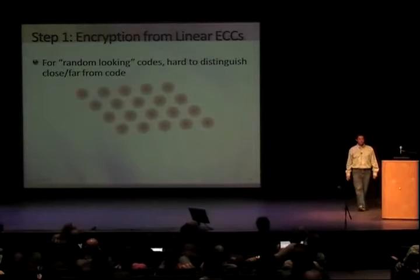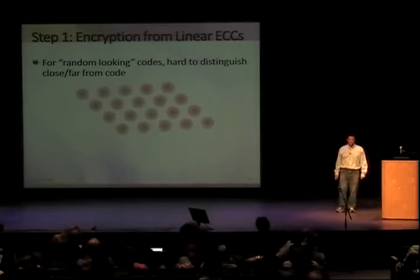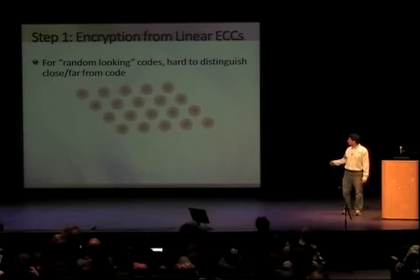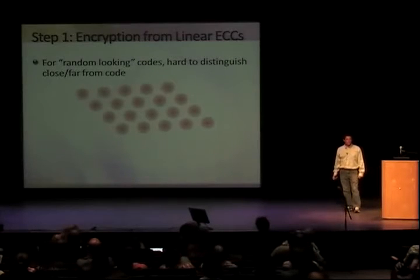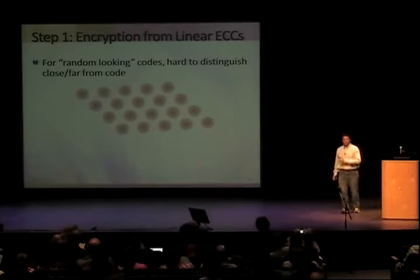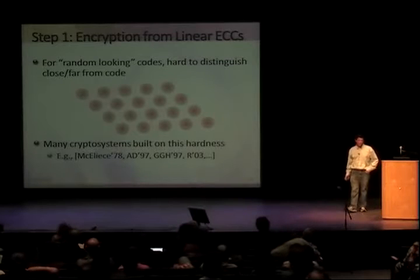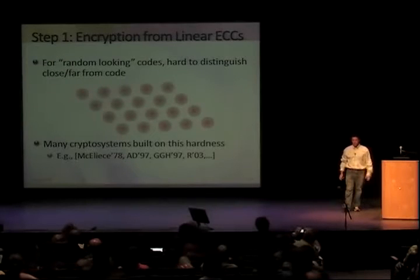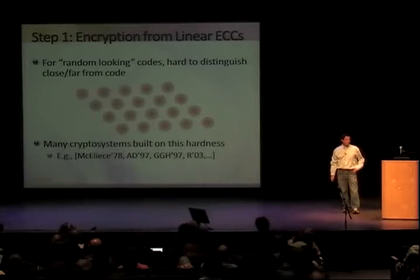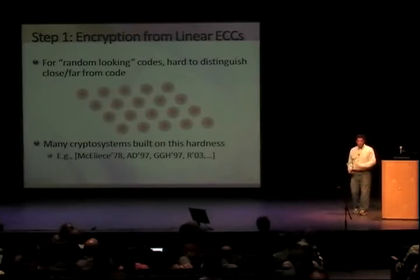Encryption from linear error-correcting codes. The underlying assumption is that for random-looking codes it's very hard to distinguish points that are close to the code from points that are far away. In two dimensions it's easy, but add 500 more dimensions and it becomes hard. Many cryptosystems are already built around this hardness — arguably the McEliece cryptosystem from 1978 already uses this principle, and many lattice-based cryptosystems like the Ajtai-Dwork and GGH schemes are based on the same idea.